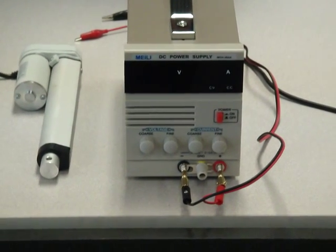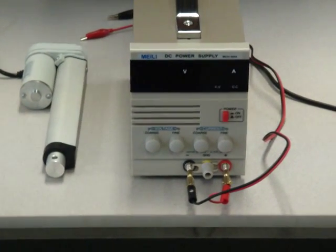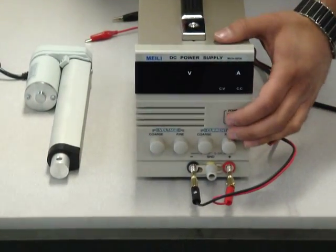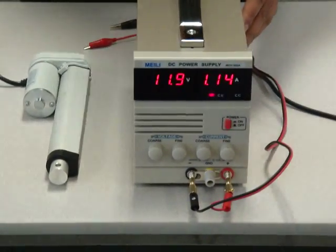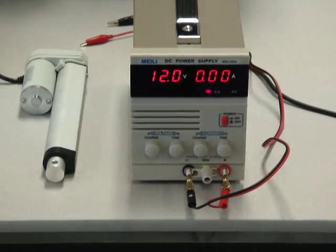Today I'm going to show you an example of how our internal limit switches work with one of our PA14 models. So I'm going to turn on our power supply, as you can see it's already set to 12 volts.